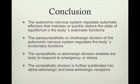Conclusion: the autonomic nervous system regulates automatic effectors and maintains or quickly restores a state of equilibrium. The parasympathetic or cholinergic division regulates the body's involuntary functions. The sympathetic or adrenergic division enables the body to respond to emergency or stress, and is further subdivided into alpha-adrenergic and beta-adrenergic receptors, while the parasympathetic is divided into muscarinic and nicotinic receptors.